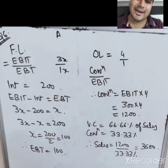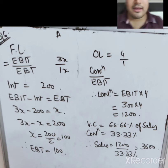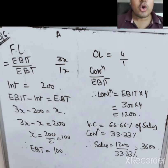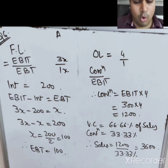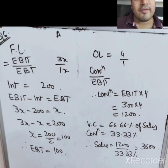This completes company A's income statement for question 6. Students should solve companies B and C similarly as homework. Questions 7 and 8 onwards will be covered in the next lecture. Thank you very much, friends.